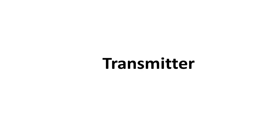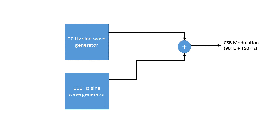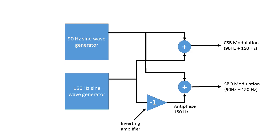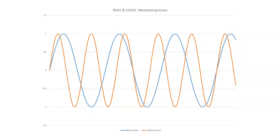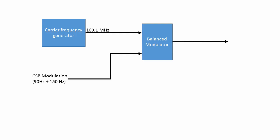Now we'll look at a block diagram of the ILS transmitter to see how these signals are produced. Two sine wave audio generators, one on 90 Hz and the other on 150 Hz, are provided. To give the CSB modulating signal the two tones are simply added together — this could be as simple as a couple of resistors. The SBO signal also consists of the two tones added together, however in this case one of them is inverted before being added to the other. In the diagram the 150 Hz signal is shown to be inverted.